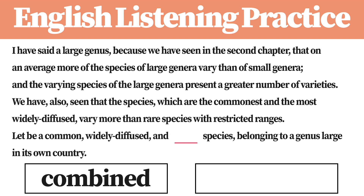I have said a large genus, because we have seen in the second chapter, that on an average more of the species of large genera vary than of small genera, and the varying species of the large genera present a greater number of varieties. We have, also, seen that the species, which are the commonest and the most widely diffused, vary more than rare species with restricted ranges. Let be a common, widely diffused, and varying species, belonging to a genus large in its own country.